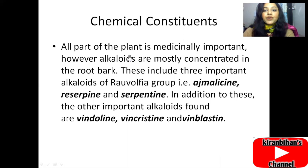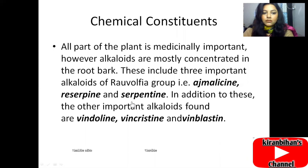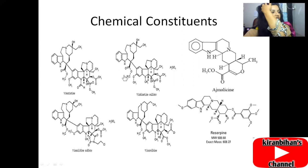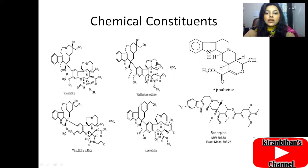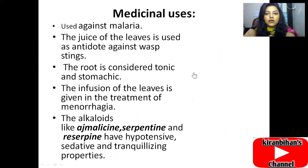In addition to the three main alkaloids — ajmalicine, reserpine, and serpentine — other important alkaloids found in Catharanthus roseus are vindoline, vincristine, and vinblastine. The chemical structures of ajmalicine, vincristine, vinblastine, and vindoline can be seen here. You will learn to memorize these chemical structures through practice.